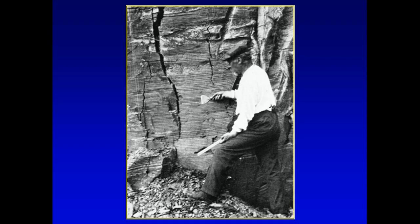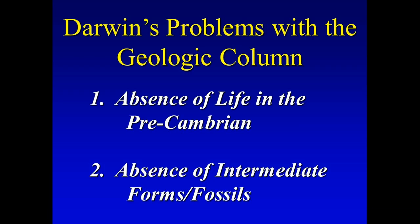Darwin noticed these two problems: the absence of life in the pre-Cambrian (the cryptozoic), and the absence of any intermediate forms. His comment was: until they solve these two problems, my theory — his general theory — would not stand. And it has not been proven to this point.